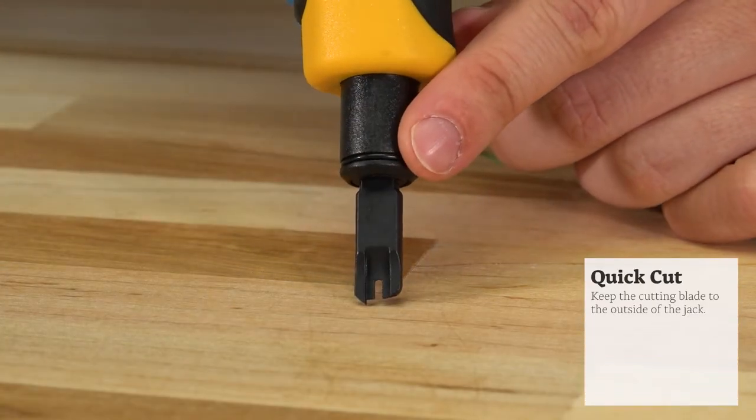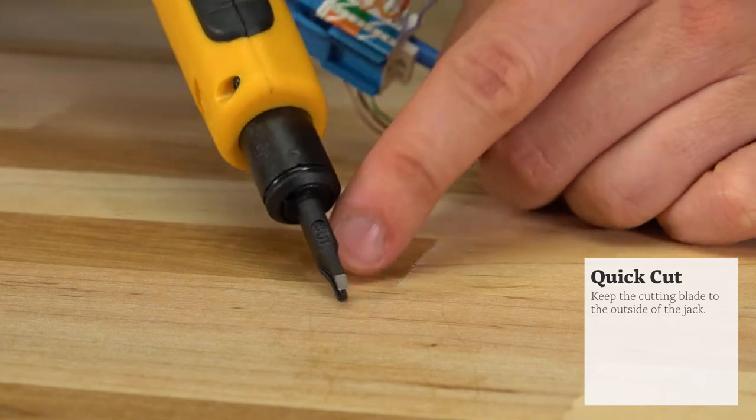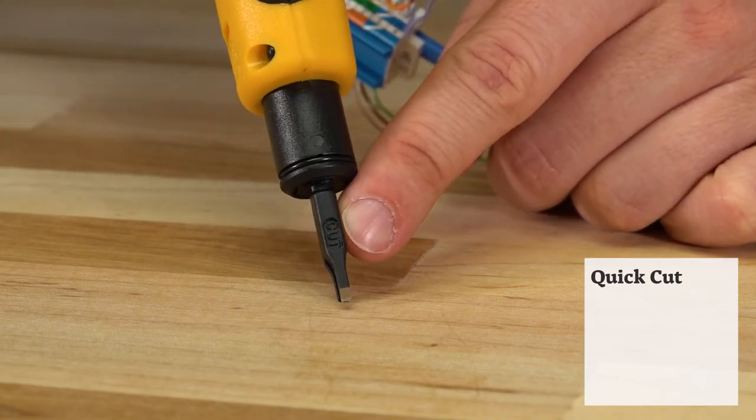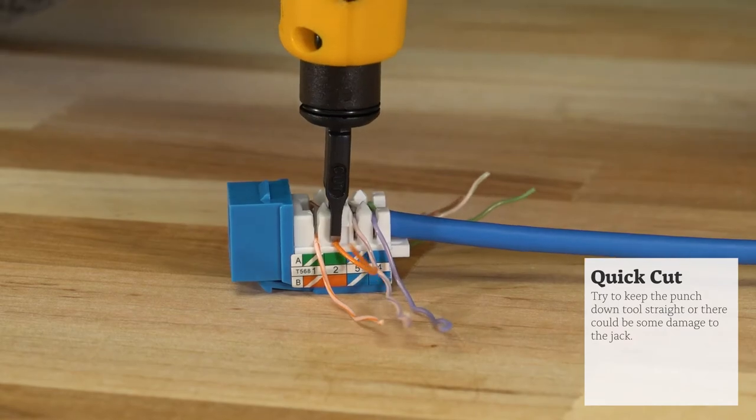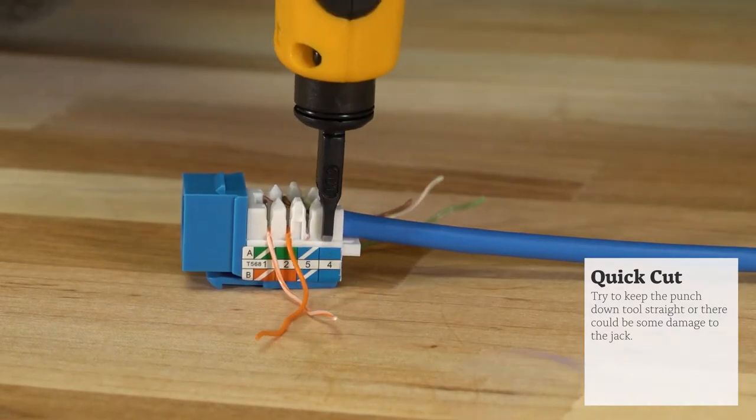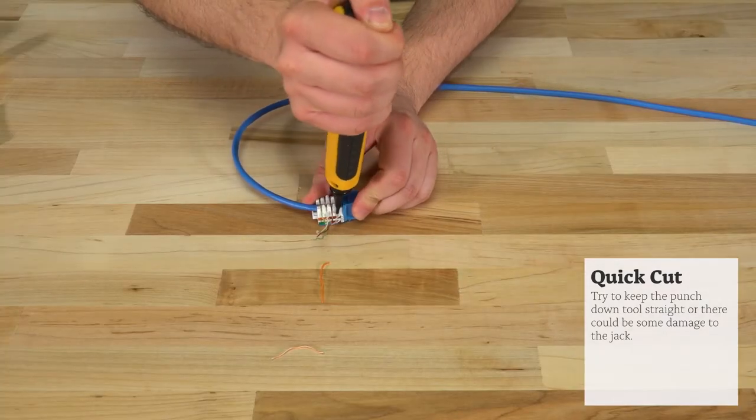Finally it's time to punch this thing down. Set the punch down blade between the post with the cutting blade on the outside of the connector. Press the tool down firmly until there is a loud click. Repeat this process for all eight wires.